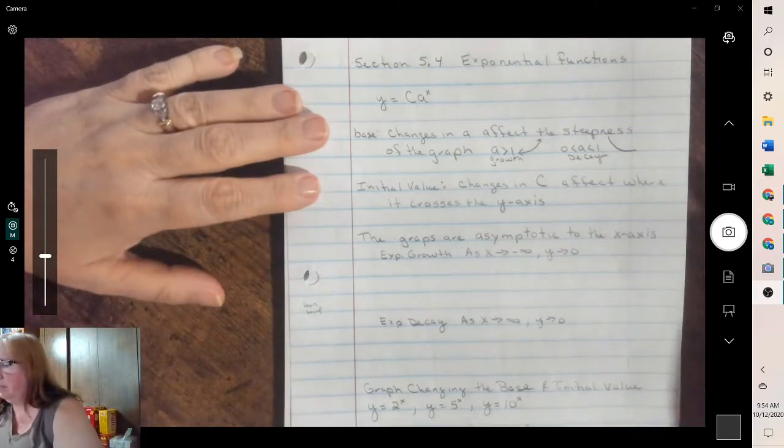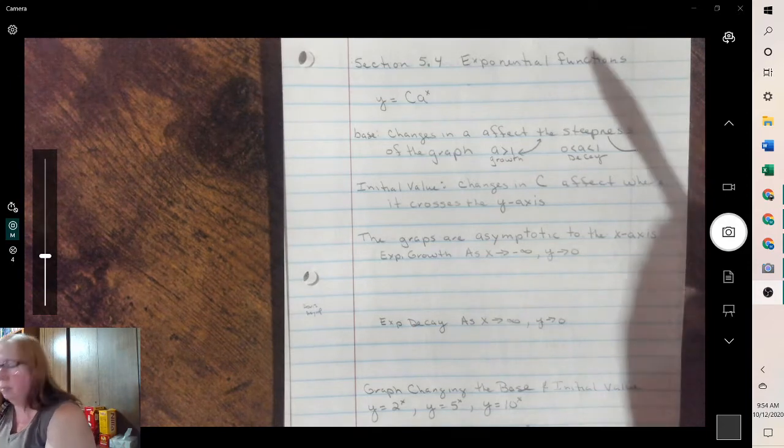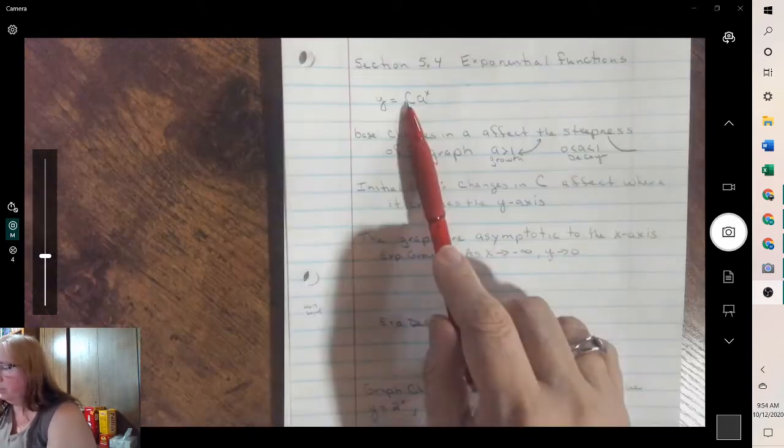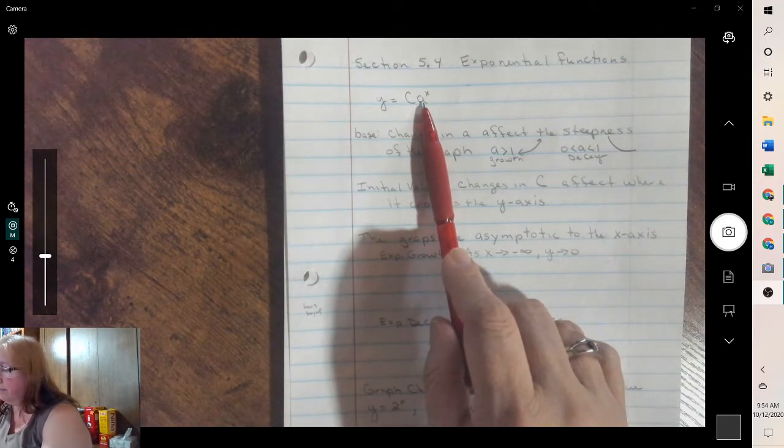Hello, I'm Mrs. J, and today we're going to cover section 5.4, Exponential Functions. Remember, the exponential function equation is this, where c is your starting amount and a is your growth or decay factor.